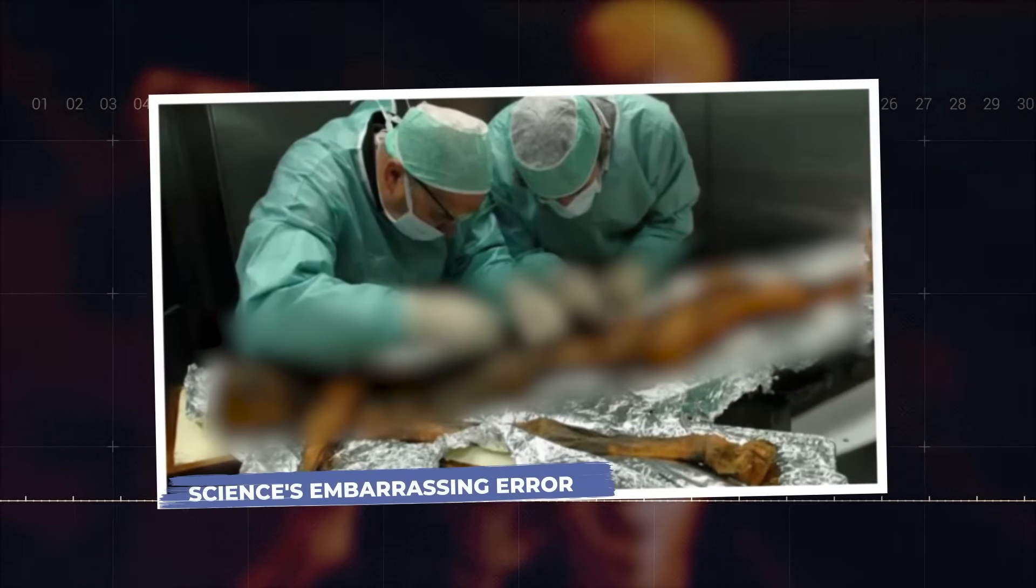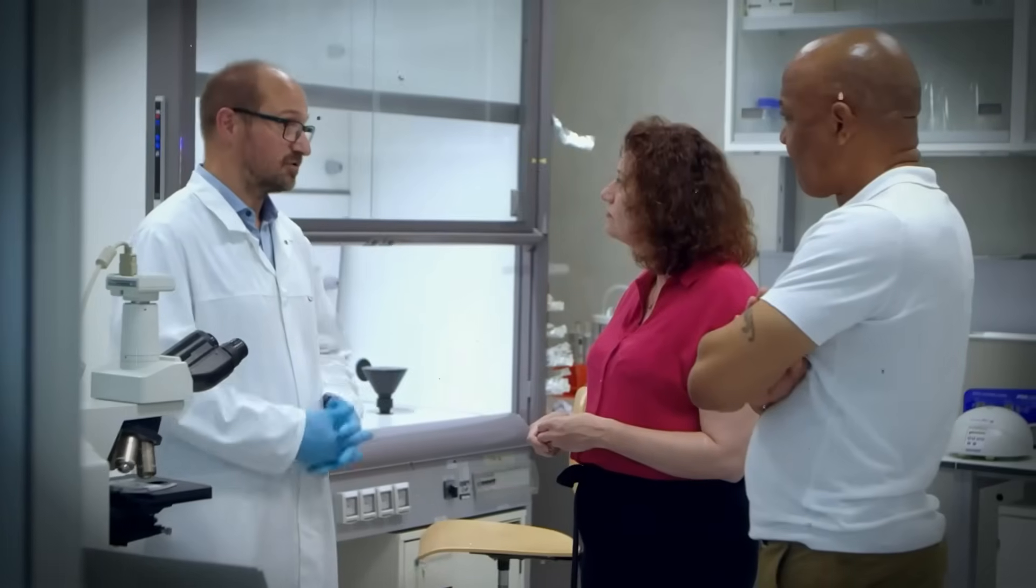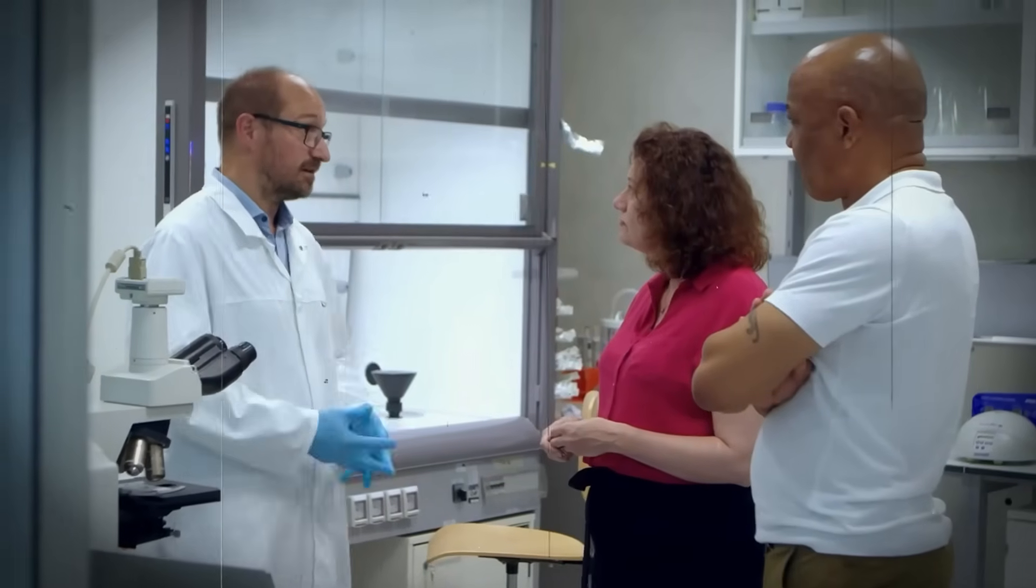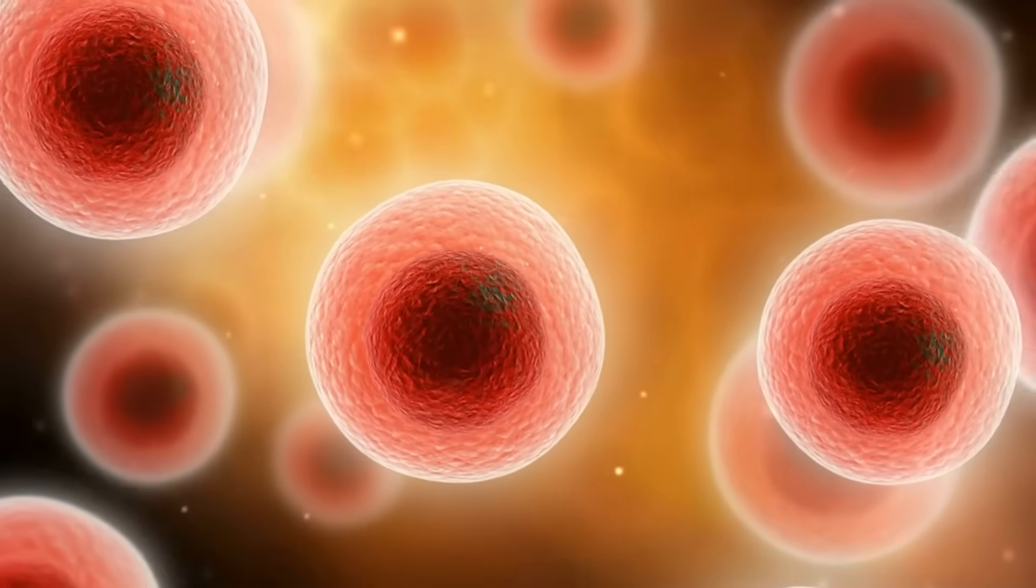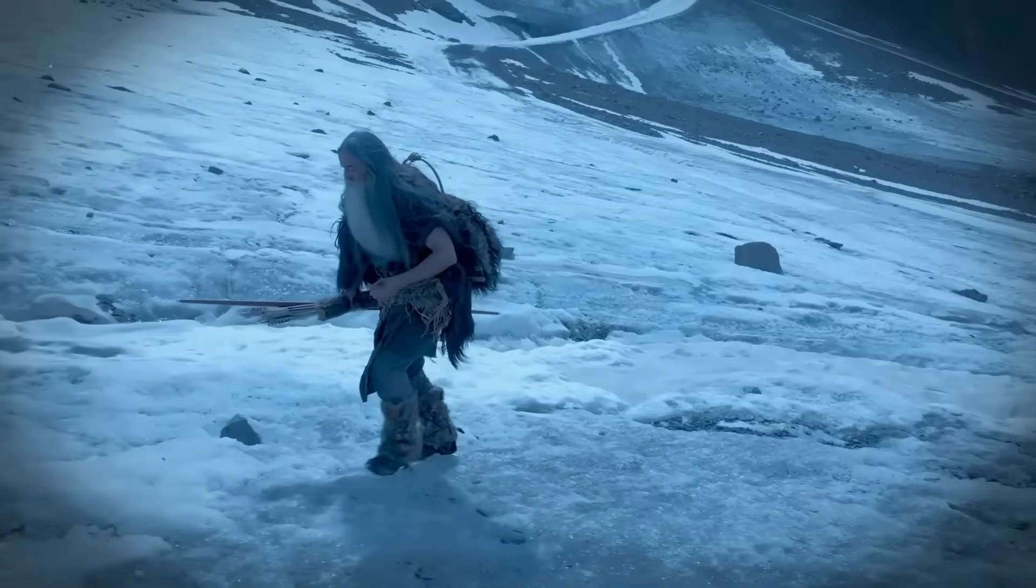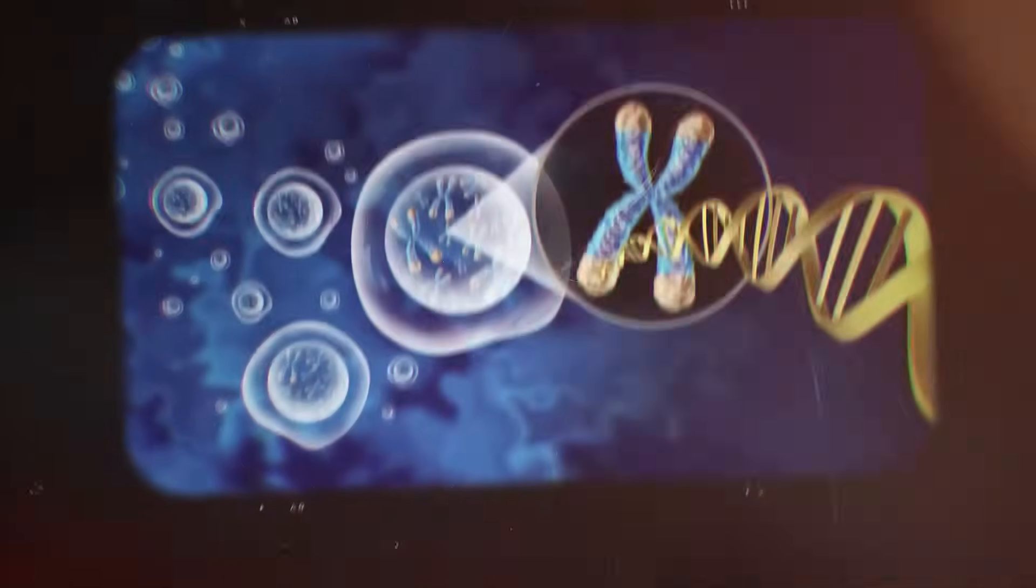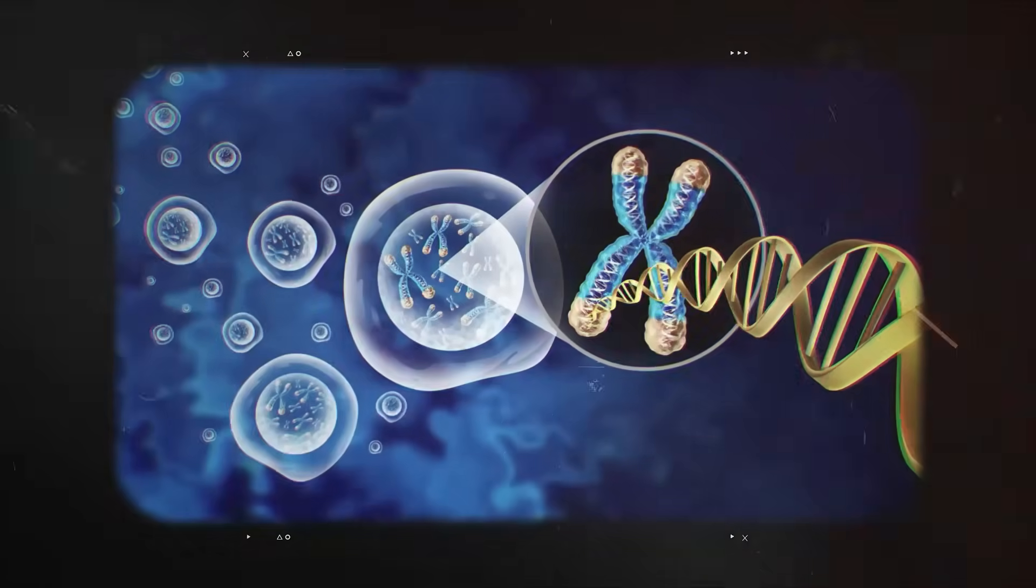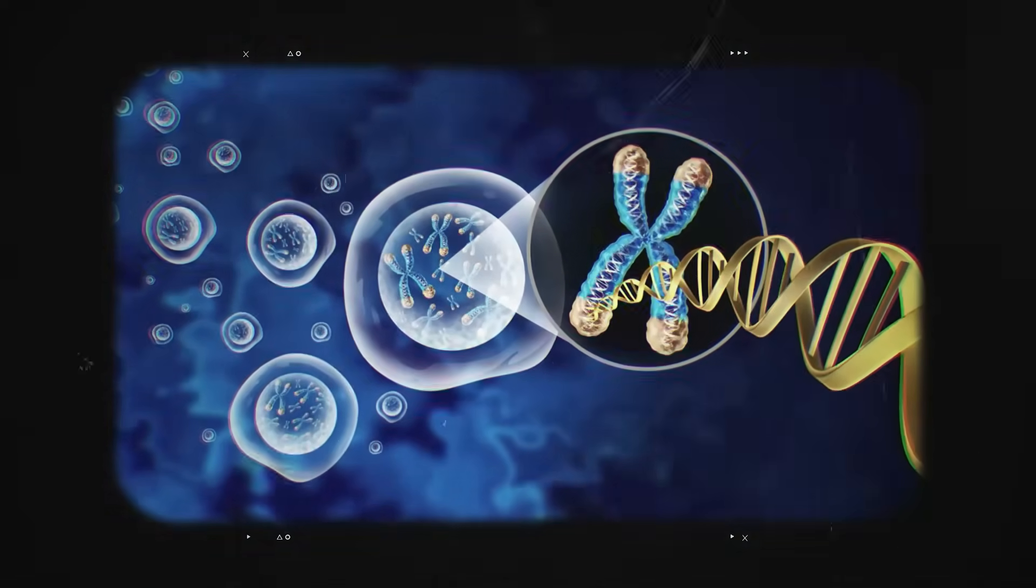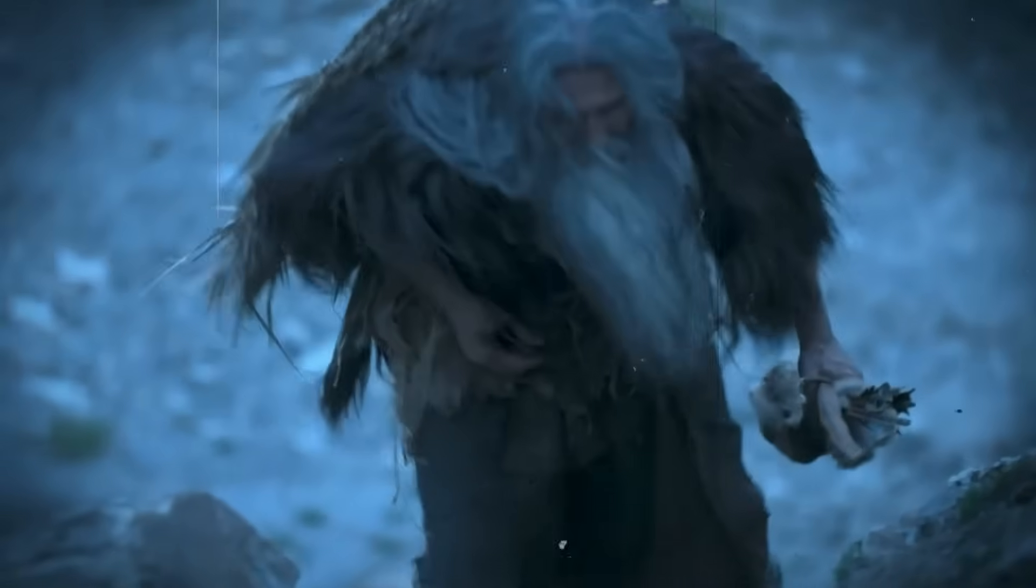Science's Embarrassing Error. For years after his discovery, Ötzi was a global sensation. Scientists were desperate to unlock every secret held within his frozen cells. The ultimate prize? His complete genetic code. In 2012, they announced they had done it. They had mapped Ötzi's genome, a monumental achievement for the time.